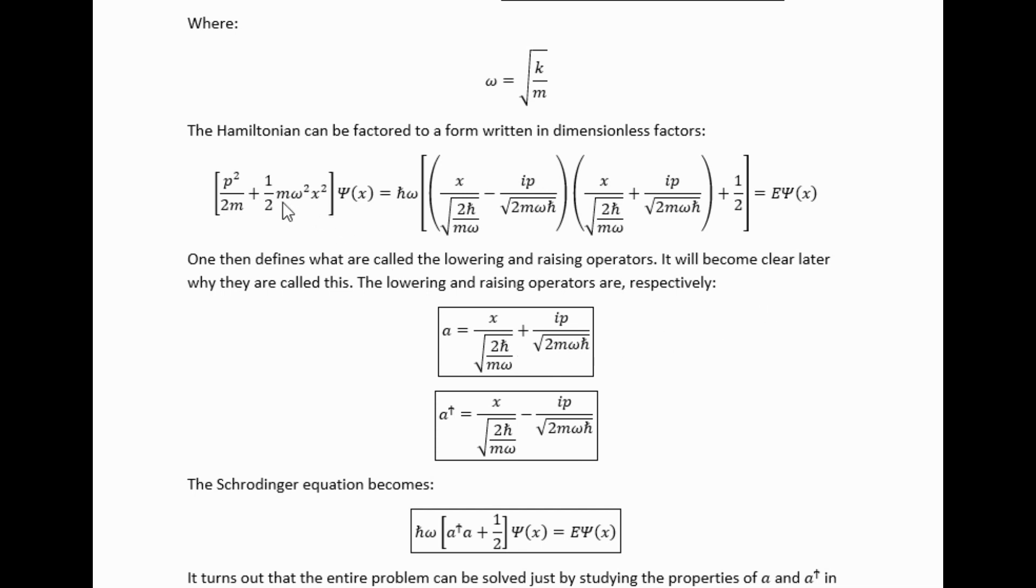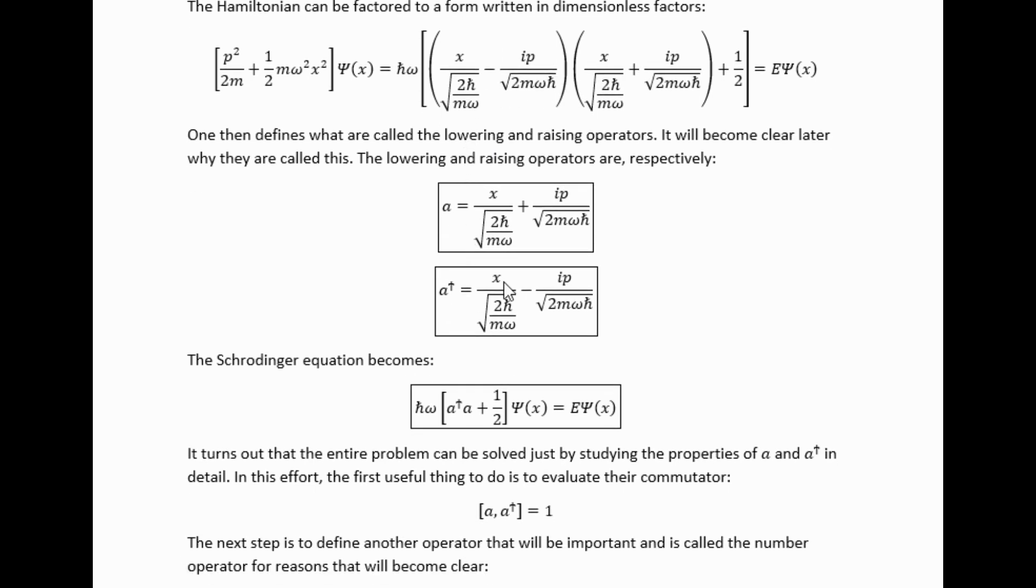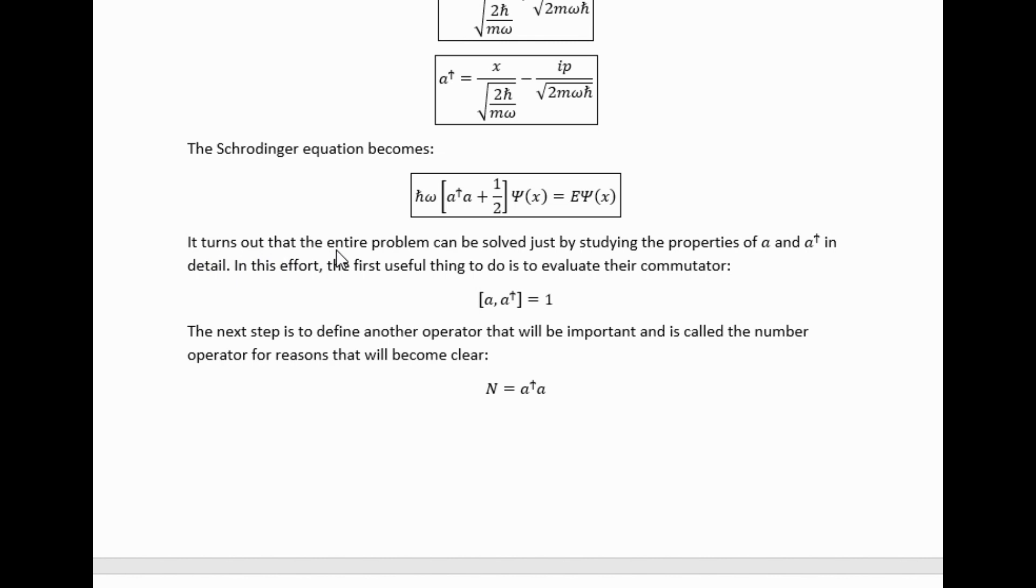If we look back at this Hamiltonian, we find that it can, in fact, be factored like this, which allows us to identify these two operators and re-express the Schrödinger equation like this. As I said, it turns out that the entire problem can be solved just by studying the properties of a and a dagger in detail.